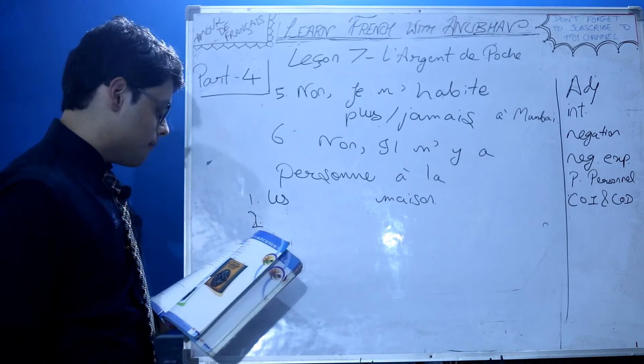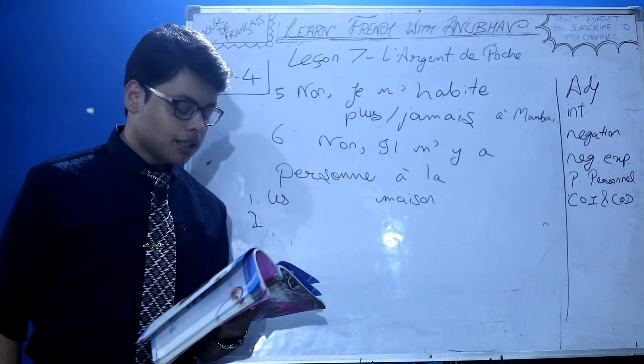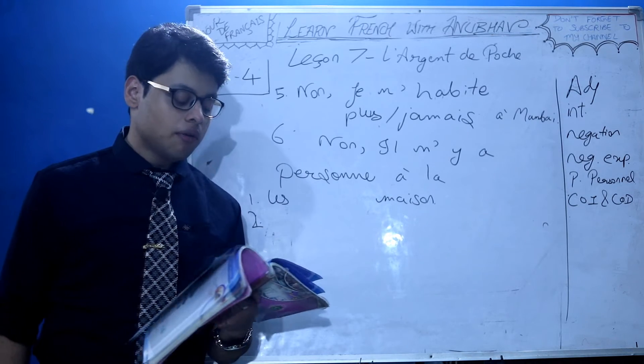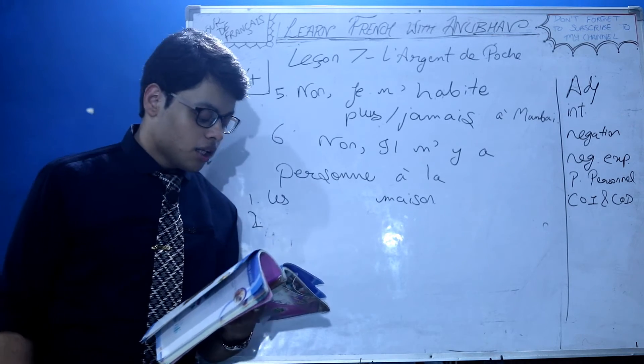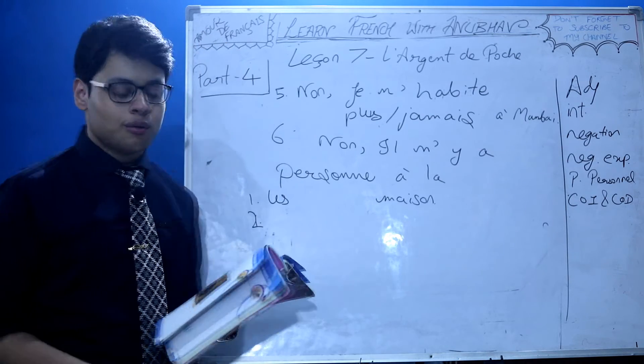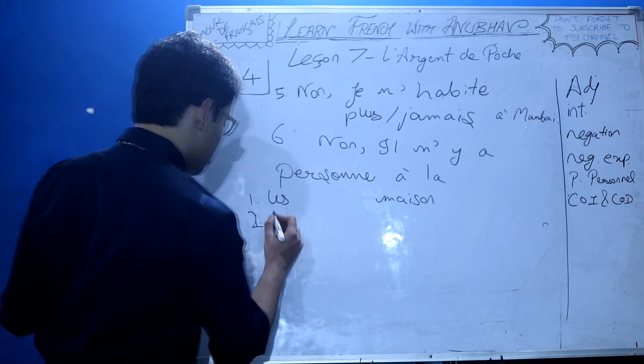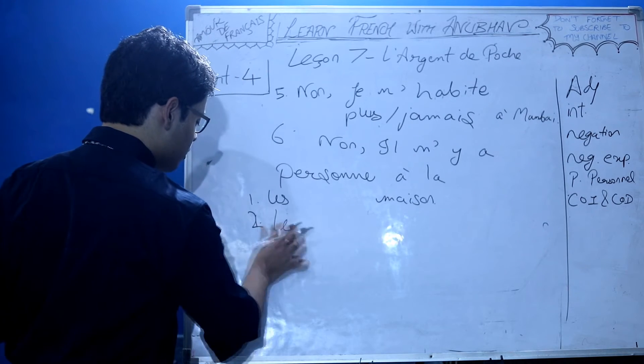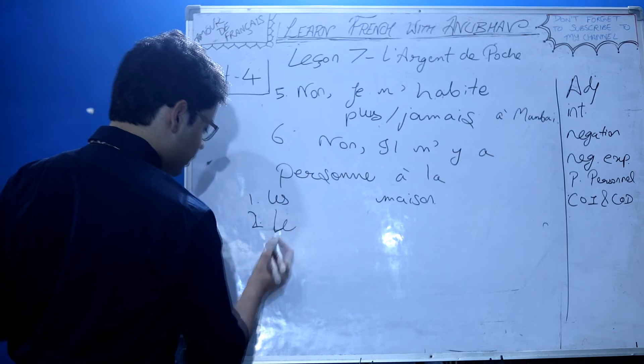Third: Quand il faut consoler le bébé qui pleure. When you're consoling a child who is crying, c'est moi qui le console. It's me who consoles. You console who? The baby. So it's le here.